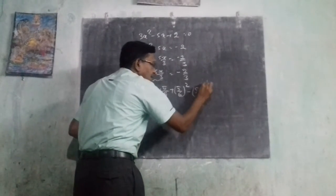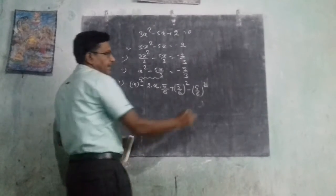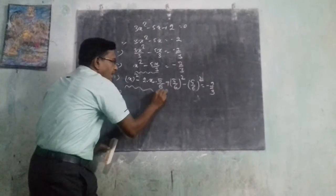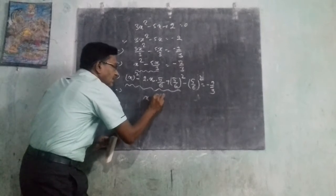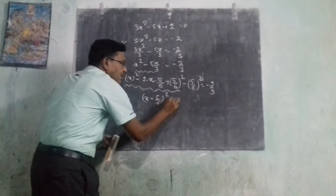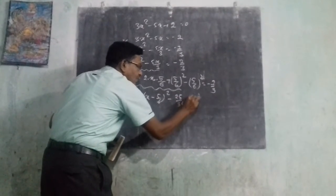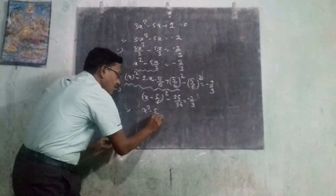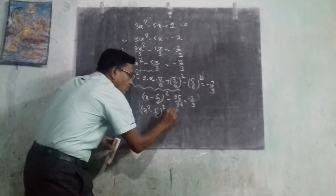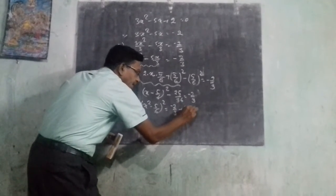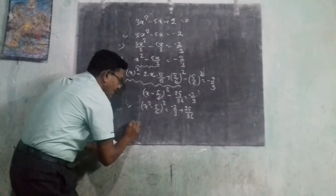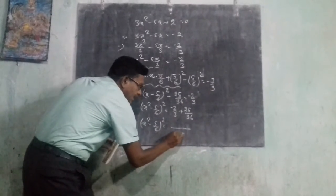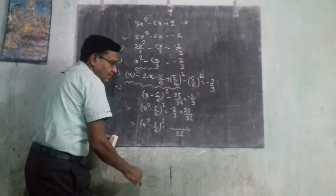So I subtract (5 over 6) squared here: x minus 5 over 6, whole squared, minus 25 over 36, equals minus 2 over 3. Now x minus 5 over 6, whole squared, equals minus 2 over 3 plus 25 over 36. Taking the LCM as 36, divided to get 12.